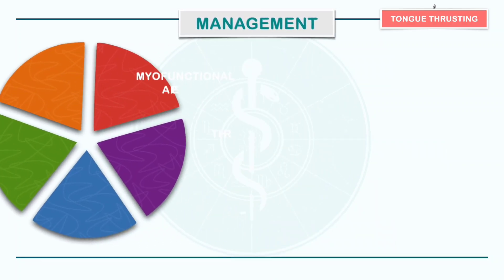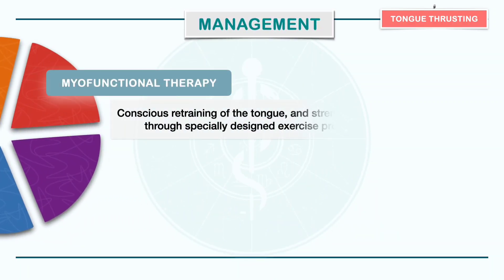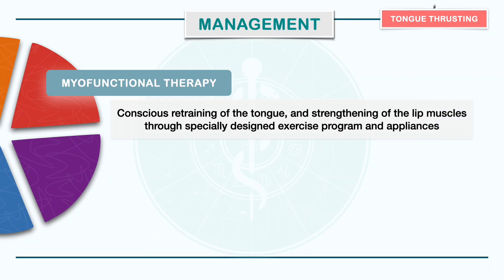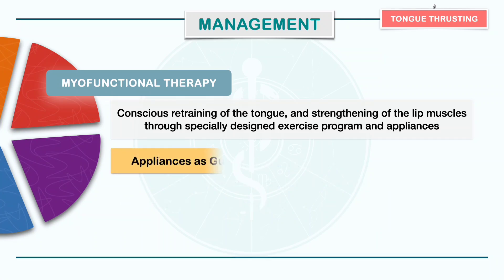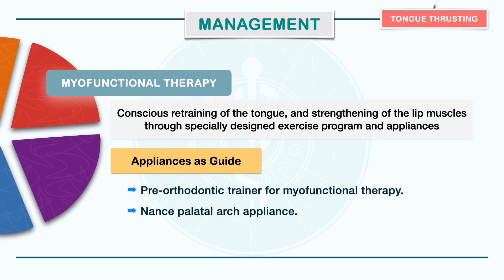Starting with myofunctional therapy, it involves conscious retraining of the tongue and strengthening of lip muscles through specially designed exercise programs and appliances. The steps include acquainting the patient with the abnormal swallowing pattern and teaching and reinforcing the correct pattern of swallowing through various exercises such as sipping of water in front of a mirror, sugarless mint or fruit drop exercise, orthodontic elastics and 4S exercise. Once the patient has trained the tongue and muscles to function properly, appliances such as pre-orthodontic trainer or Nance palatal arch can be used as a reminder to position the tongue correctly during swallowing.